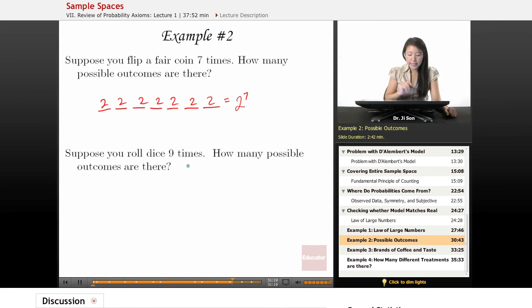Suppose you roll dice nine times. How many possible outcomes are there?